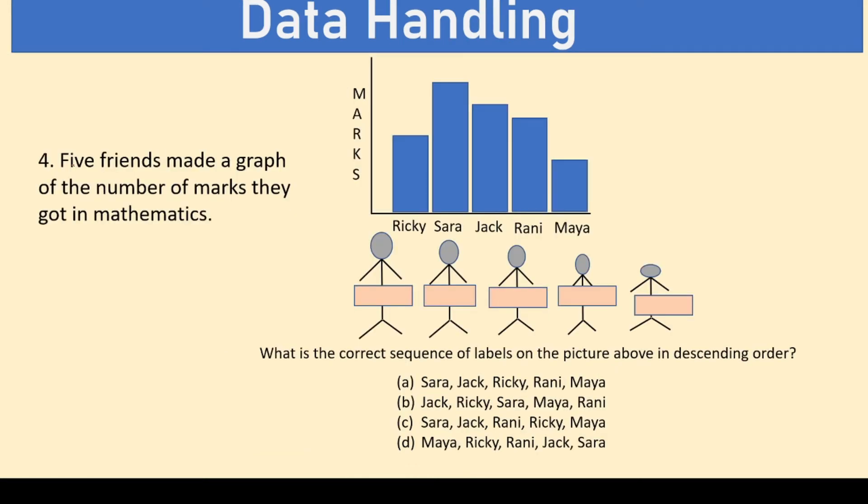Five friends made a graph of the number of marks they got in mathematics. These are the marks. These are the students. What is the correct sequence of labels on the picture above in descending order? Now, descending is from higher to smaller number. Remember this rule. Based on this, the highest is Sara. So, Sara is one. Then is Jack. Then is Rani. Then is Rikki. And then is Maya. Which is our answer in option C. Sara, Jack, Rani, Rikki and Maya.